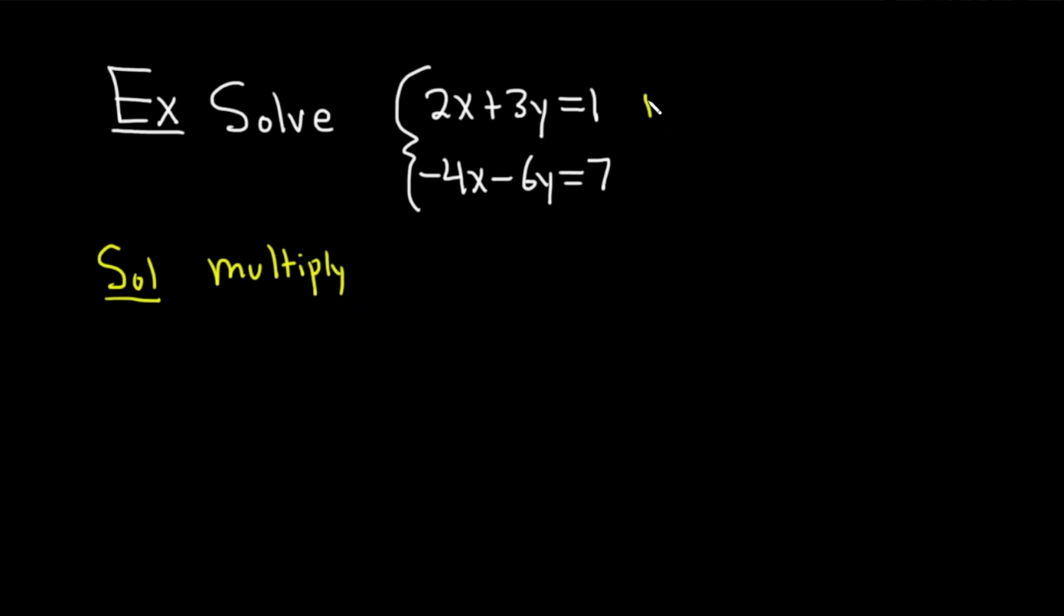And again, I'll number them. This is 1 and this is 2. So let's multiply that first equation by 2. When we do that, we get 2 times 2, which is 4x. 3 times 2, which is going to give us 6, and then we still have the y. And 2 times 1 is just 2. Then down here, we simply have negative 4x minus 6y equals 7. Just writing that second equation right below it.